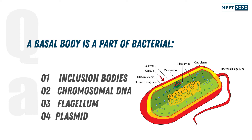A basal body is a part of bacterial — the answer is flagellum. The flagellum of bacteria is very distinct from eukaryotic. There are actually three types of flagella: bacterial, archaebacterial, and eukaryotic. We are talking about bacterial flagellum.